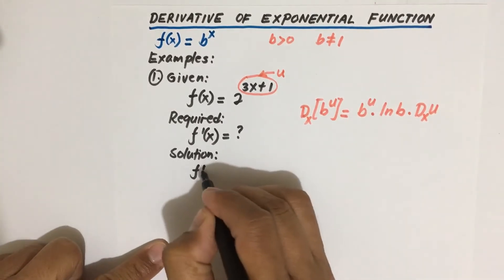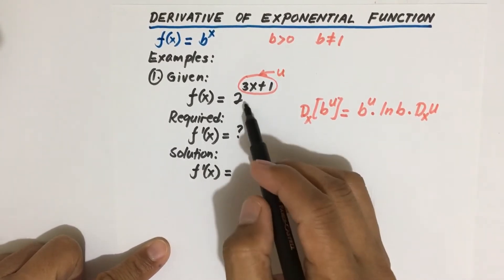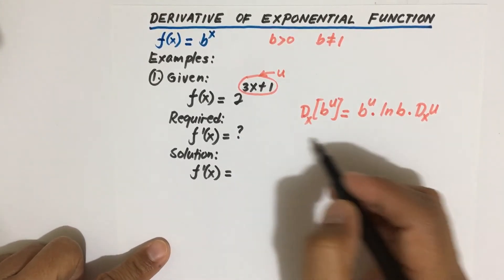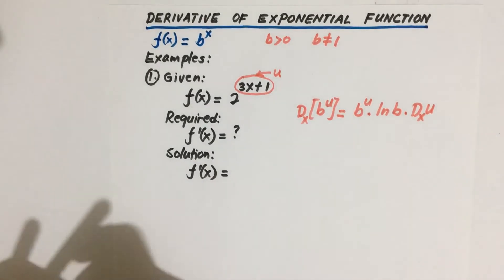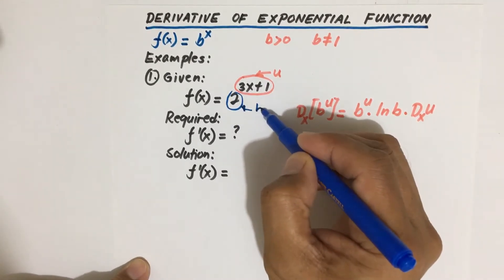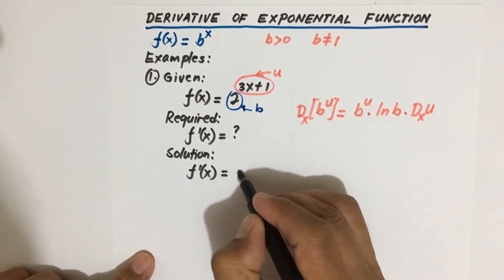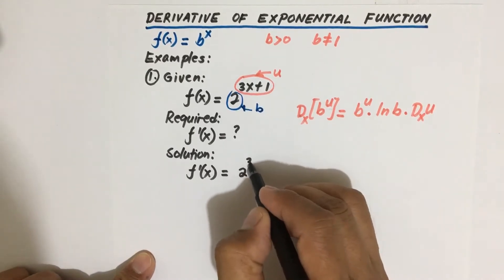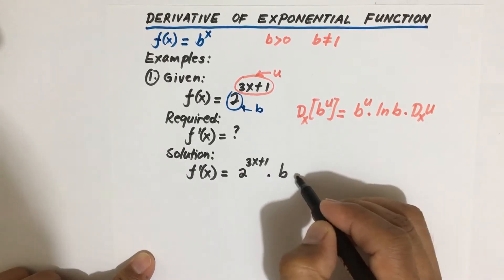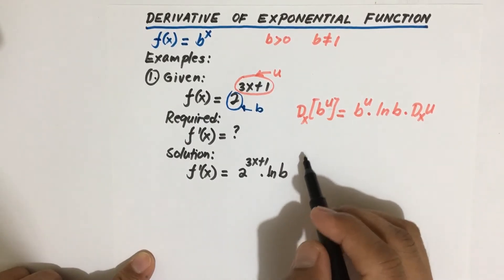F prime of x is equal to, using the formula, we are now in the form of b to the u. So derivative of b to the u with respect to x, so we just write this. By the way, this is our b, so the 2 here is our b. Therefore we have b to the u, meaning 2 to the u. Our u is 3x plus 1, then times ln b. So ln b, our b is 2.